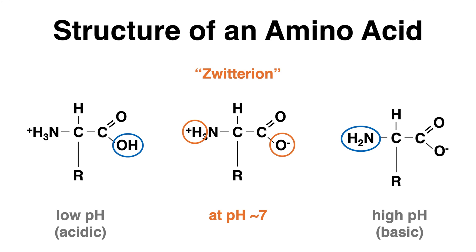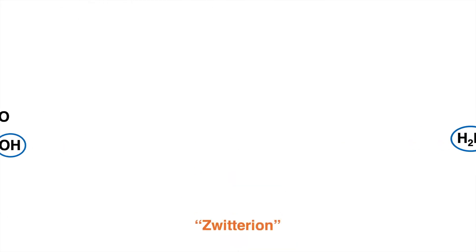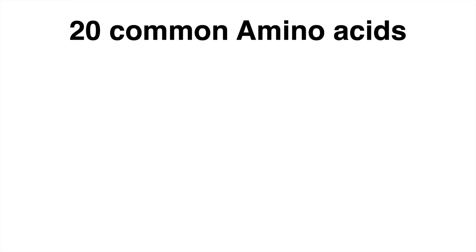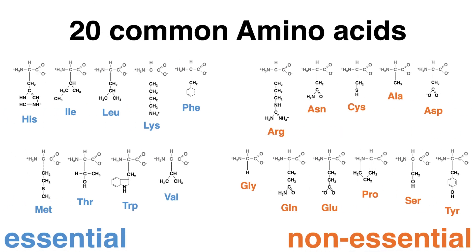There are 20 amino acids which are most commonly known, which can be classified in multiple ways. We can differentiate between essential and non-essential amino acids. Non-essential amino acids can be synthesized within our body. Nine amino acids are considered essential — they have to be taken up by food. But there are a lot of other ways to classify amino acids.